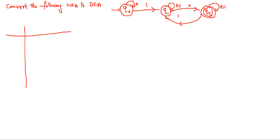How many input symbols are there? 0 and 1. What are the states? The initial state is Q0, one more state is Q1, and one more state is Q2 — and Q2 is the final state.